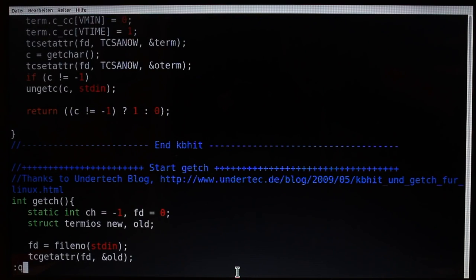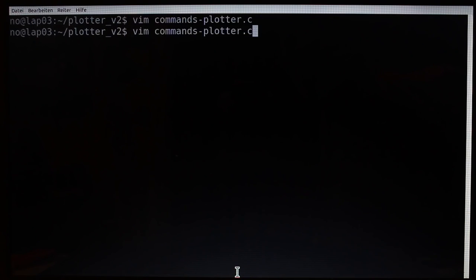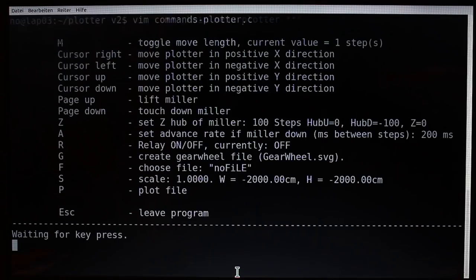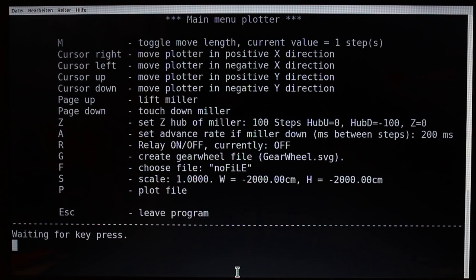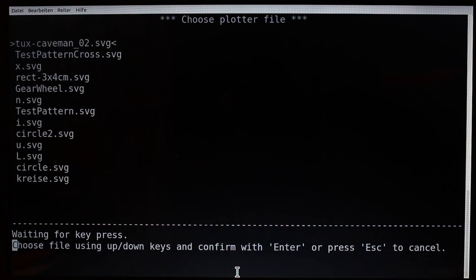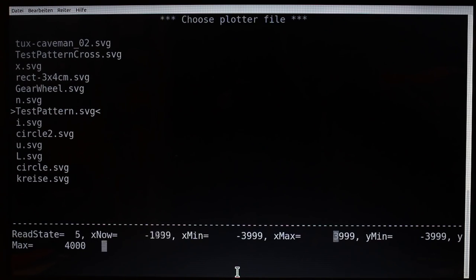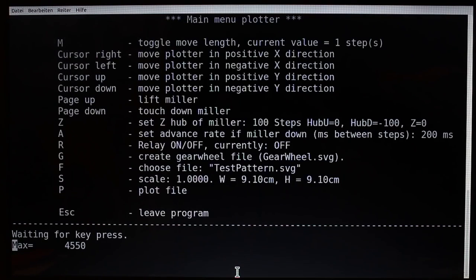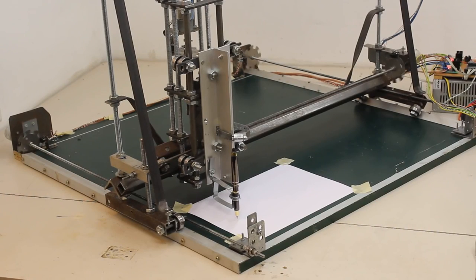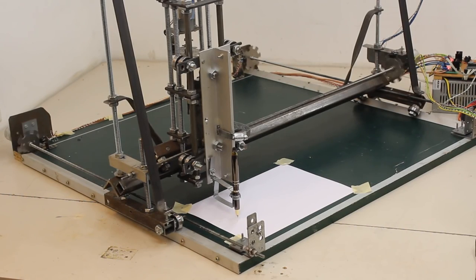The software used to control the machine is written in C and it is running from the command line. With the menu, you can choose the test pattern and set some variables. With sending the start command, the machine begins to plot the file.